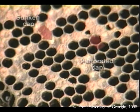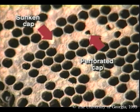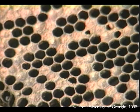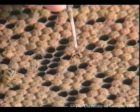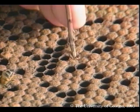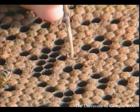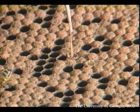As you open a hive with AFB, you may smell a foul, glue-pot odor from the decaying brood. Brood killed by AFB are usually capped, and the cappings are sunken inward and perforated. At first, the dead larvae or pupa is dull white, then progresses from tan to brown to black as it decays. Perhaps the best symptom is brood ropiness. If you find a suspicious cell of brood, insert a small stick in the cell, mix up the contents, and withdraw the stick. Brood killed by AFB will be stringy and rope out up to one inch.